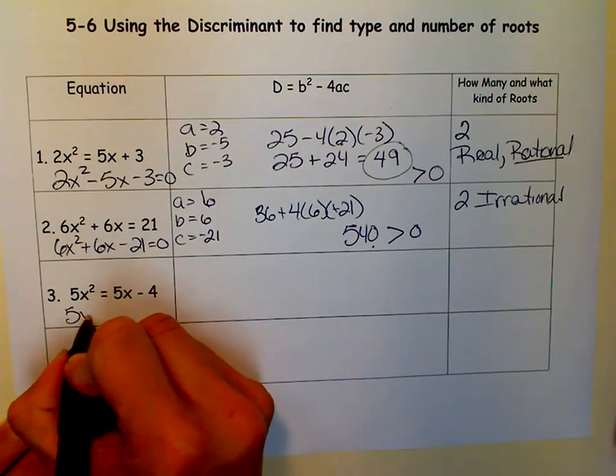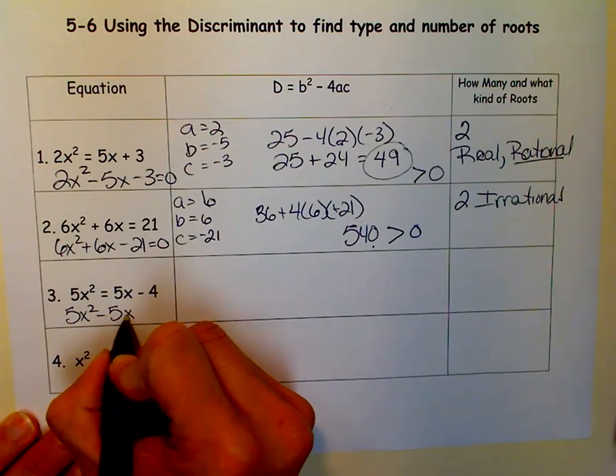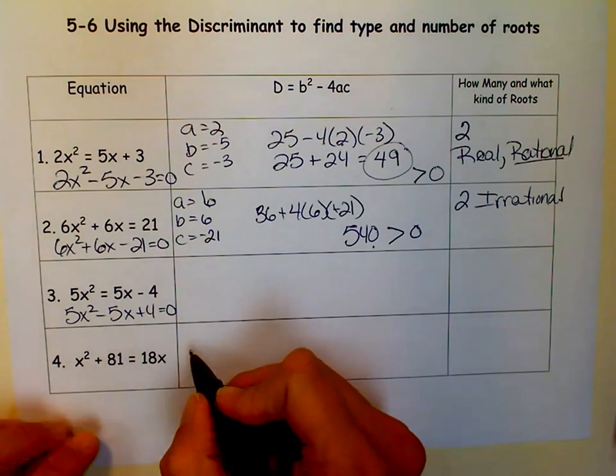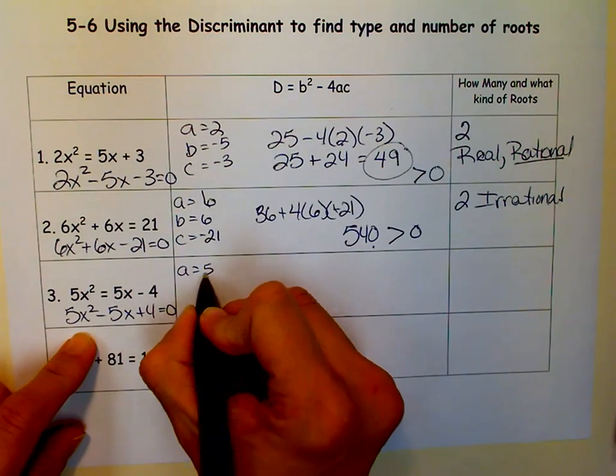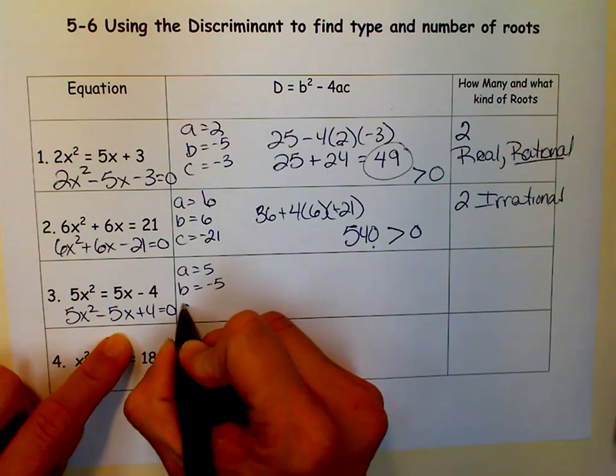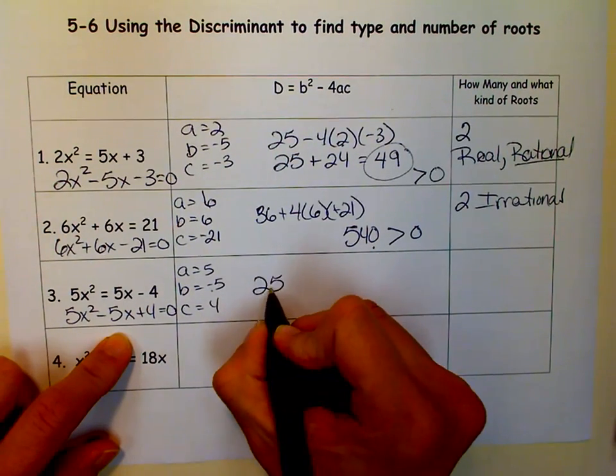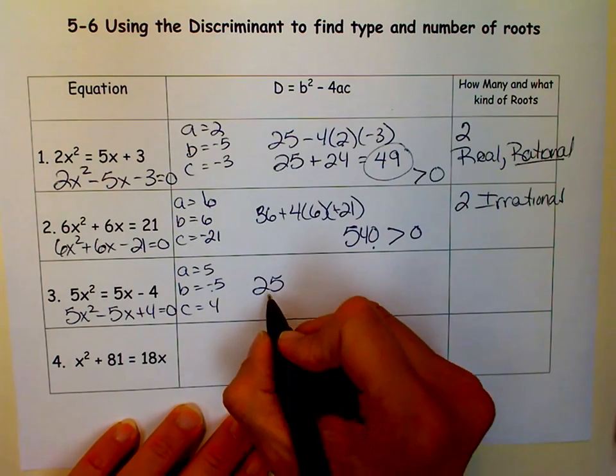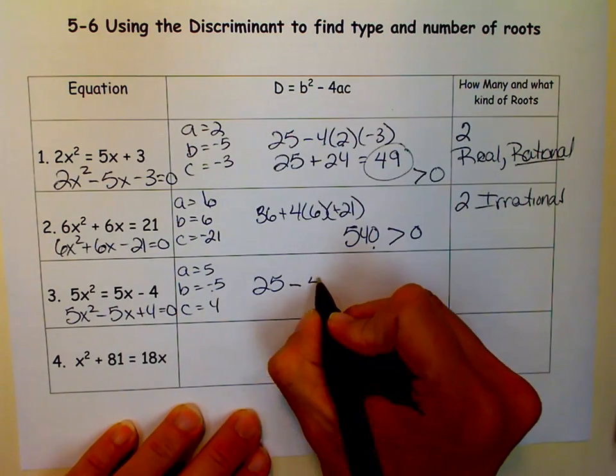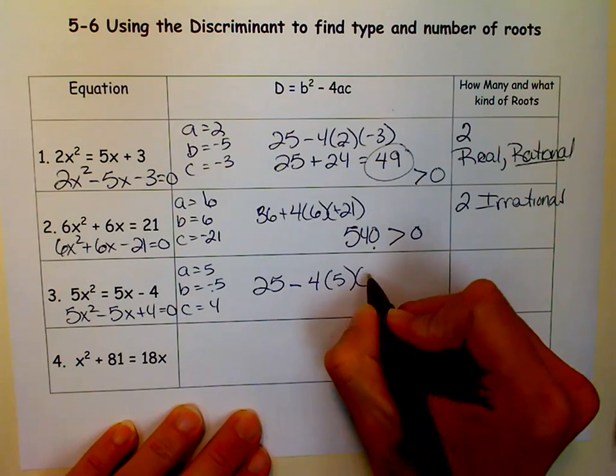Now on to this one. We have 5x squared. We're moving things over to the left. And a is 5, b is negative 5, and c is 4. So negative 5 squared. Be careful with that negative. It's a negative 5 times a negative 5, which does equal positive 25. Minus 4 times a times c.